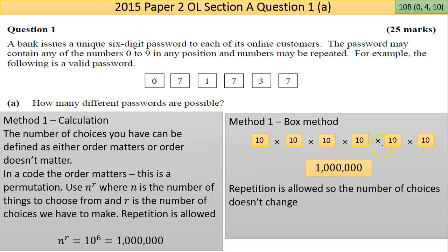You could use the formula method. The formula here is n to the power of r, which is the same as 10 to the power of 6. n is the number of choices—there's ten—and r is the number of choices you have to make, which is six. If there's no repetition allowed, you'd have to check if order matters or not, then you'd have to use nPr and nCr formulas. But that's not what's happening here because they said repetition is allowed.